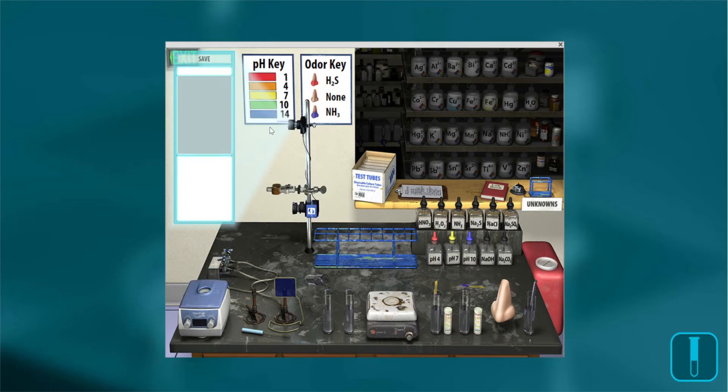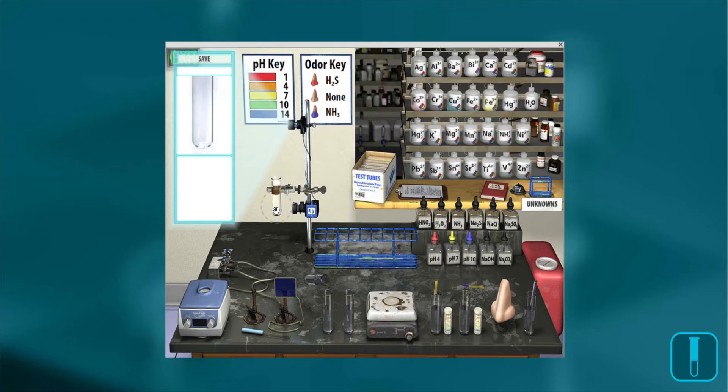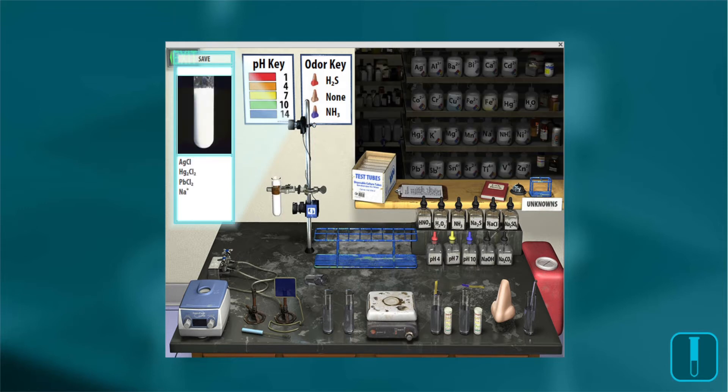You can have them add multiple cations to a test tube. For example, if they add three cations and then add chloride, they've made several insoluble chlorides. Now how would we separate those out? Students will need to learn the steps to separate and distinguish between them.